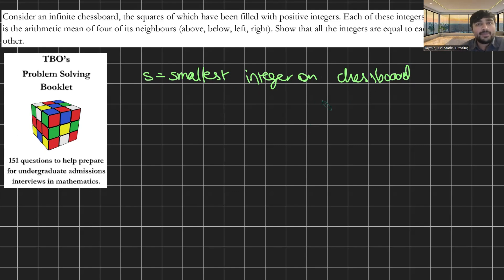So now S has got to appear somewhere at least once. Let's say S is there. Now by this argument, because S is here, well then now all four of its neighbours have to be S.